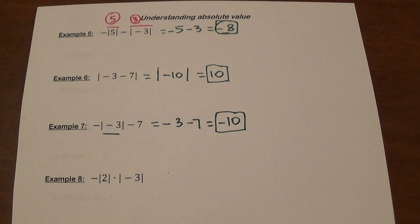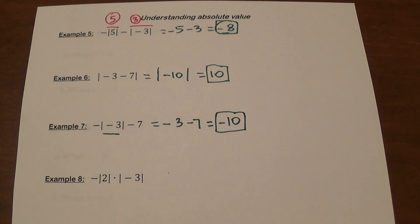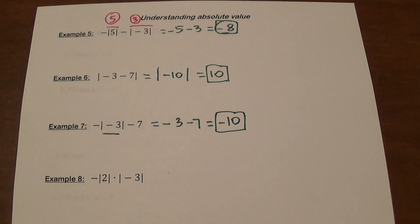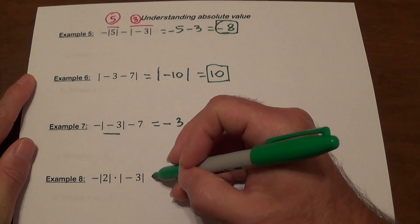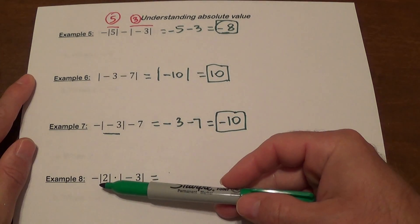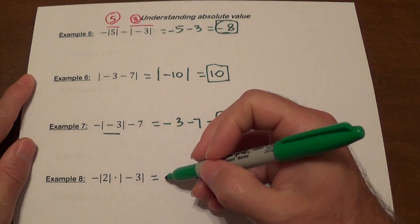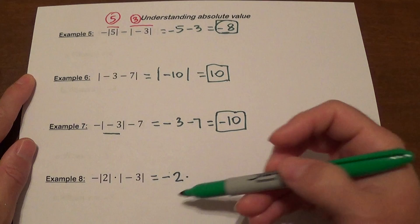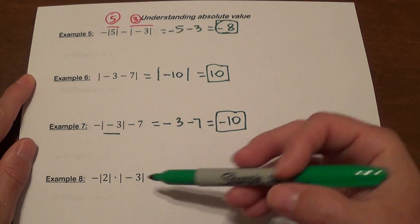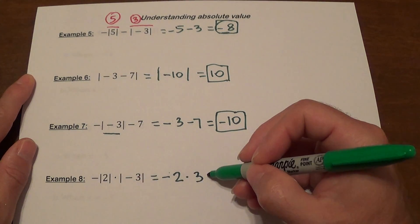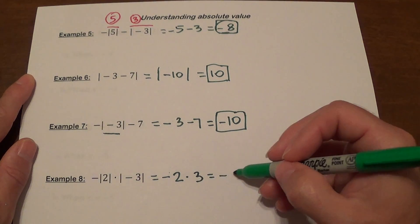You have to be very careful. When you start seeing more complex expressions, slow down and take your time. Example 8 has multiplication, but again, anything inside absolute value symbols needs to be done first. We have negative the absolute value of 2, giving negative 2, times the absolute value of negative 3, which gives 3. So it's negative 2 times 3, which is negative 6.